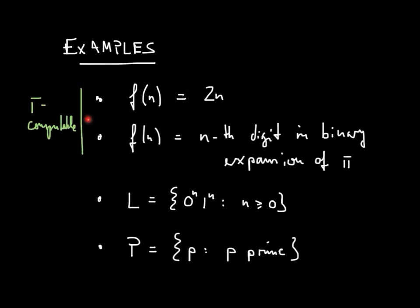Once again, those two functions here are examples of Turing-computable functions, while these two sets here are examples of Turing-decidable sets. And often the word decidable here is also replaced by computable, so we would also speak of Turing-computable sets.